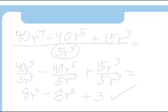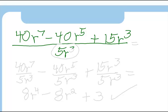So suppose I have the polynomial 40r to the 7th minus 40r to the 5th plus 15r to the 3rd and I want to divide that by 5r to the 3rd.